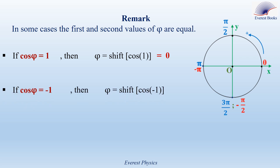If cosine phi equals minus 1, using the calculator gives shift cosine minus 1 equal to pi radians. Looking at the circle, according to the chosen positive sense, which is the counterclockwise sense, the angle is pi radians. In the negative sense, this is the angle minus pi radians. As you see, pi radians and minus pi radians are in the same position, so they are equivalent, and we have only one value for phi.